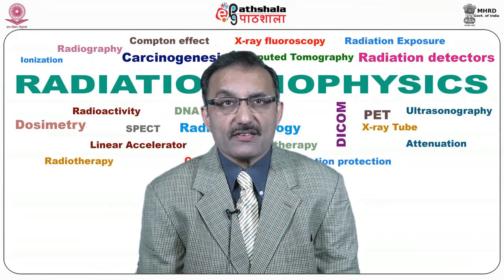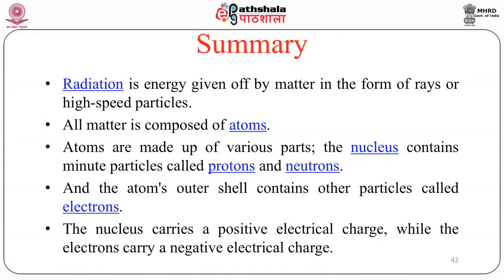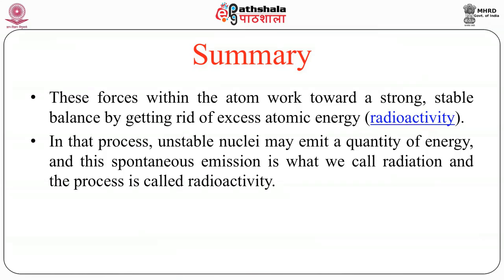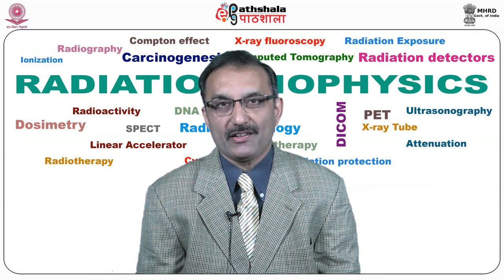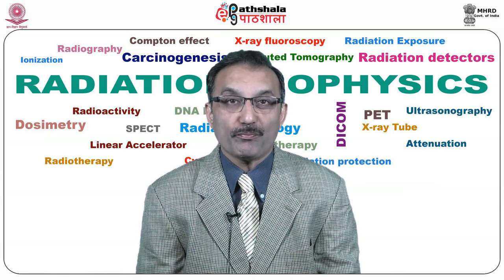In summary: radiation is energy given off by matter in the form of rays or high-speed particles. All matter is composed of atoms made of a nucleus containing protons and neutrons, and an outer shell containing electrons. The nucleus carries a positive electrical charge while electrons carry a negative charge. These forces work towards a strong stable balance by getting rid of excess atomic energy — and that is called radioactivity. Unstable nuclei emit energy, and this spontaneous emission is radiation; the process is called radioactivity. This topic is very useful for human mankind when the radiation emitted by radioactivity is used for peaceful purposes.